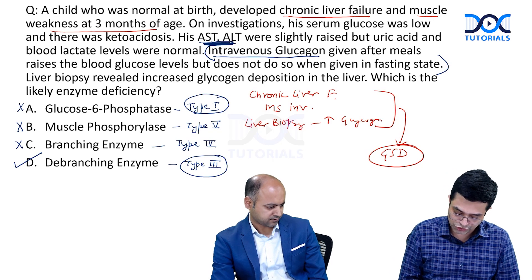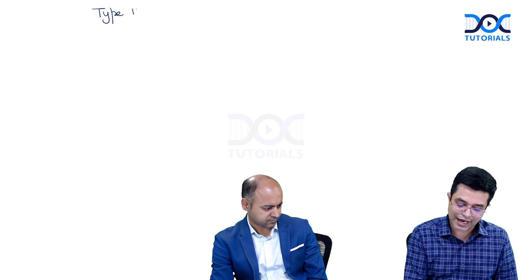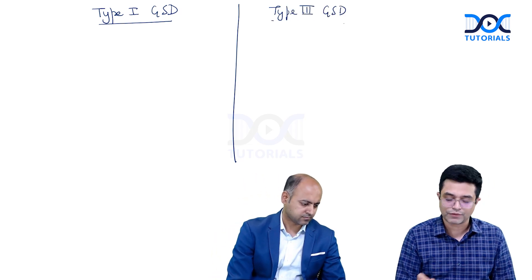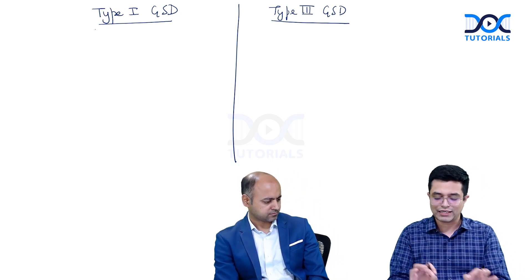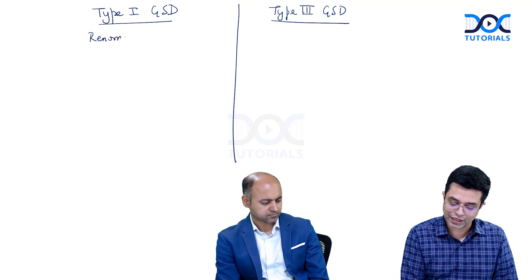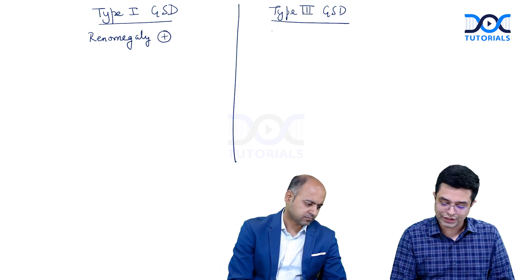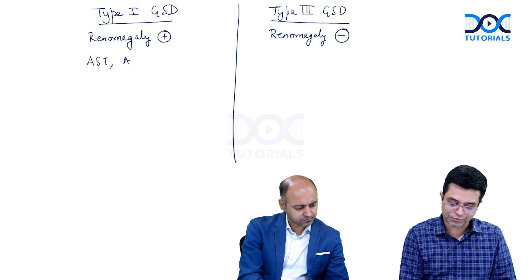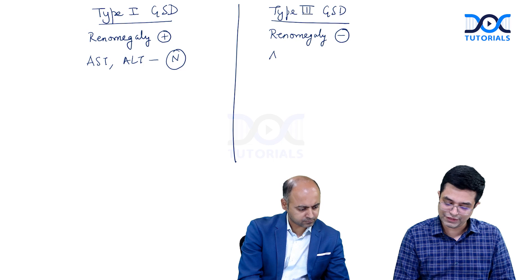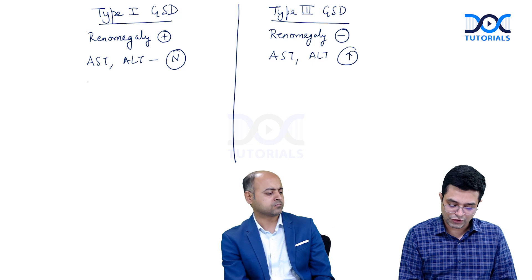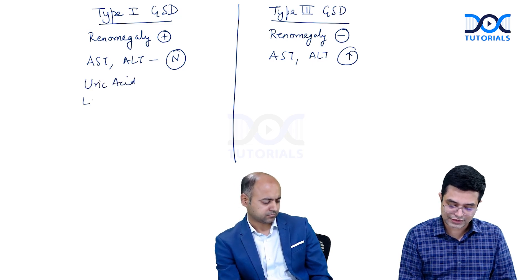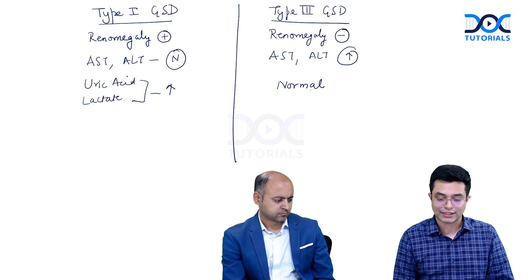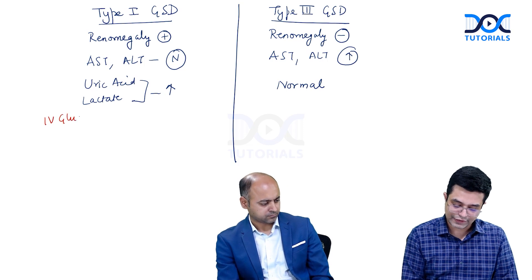To distinguish Type 1 from Type 3 GSD, there are three to four key points. First, renomegaly (kidney enlargement) is frequently present in Type 1 but not seen in Type 3. Second, AST and ALT are normal in Type 1 but elevated in Type 3. Third, uric acid and lactate levels are elevated in Type 1 but relatively normal in Type 3.